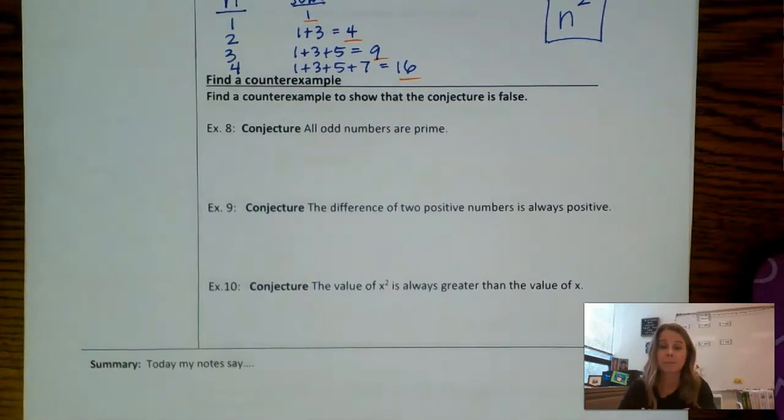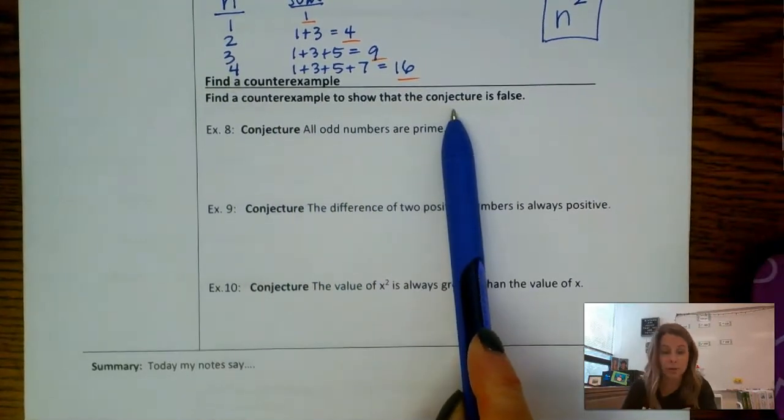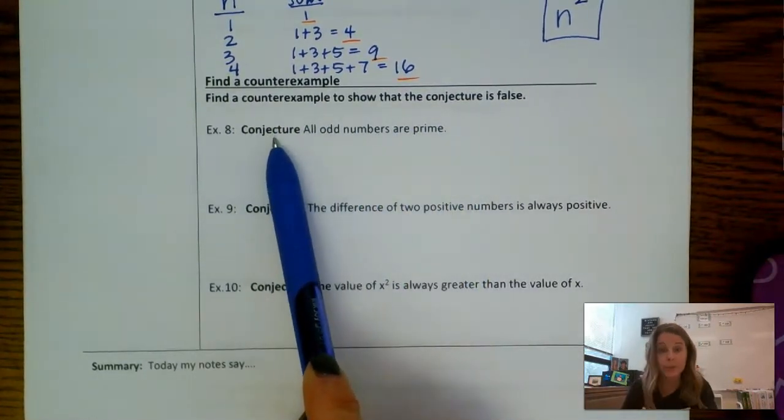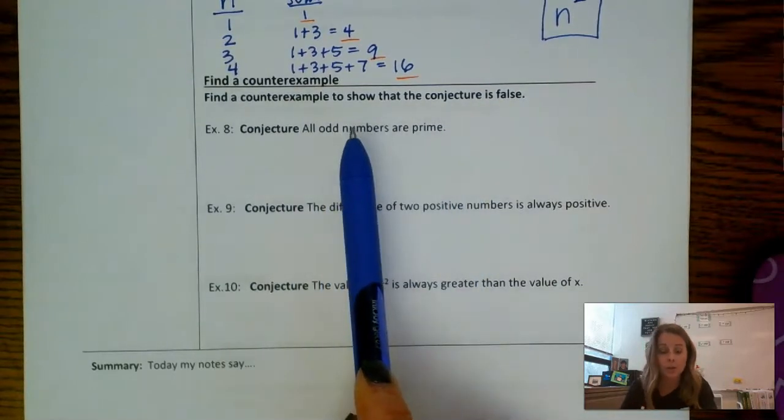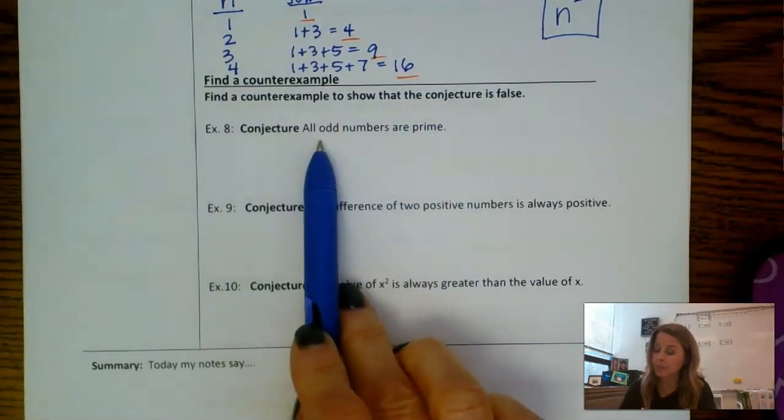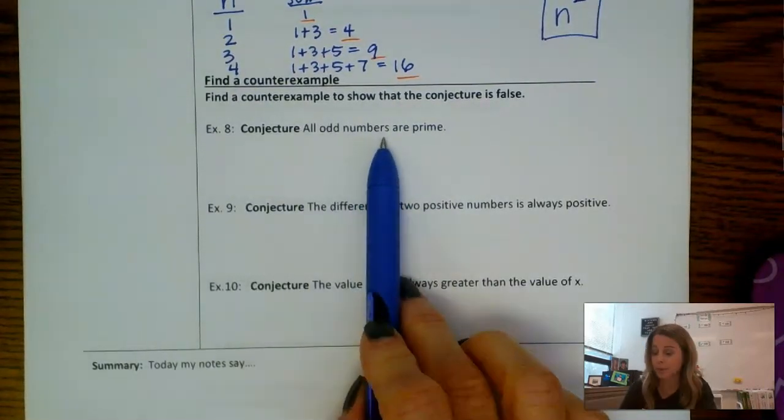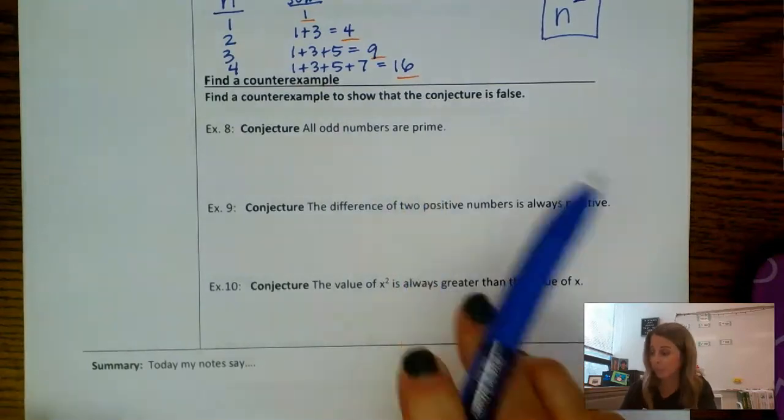There are often several counterexamples that would be valid. Find a counterexample to show that the conjecture is false. So here's the conjecture: all odd numbers are prime. So what we want to do when we do this counterexample is we still want to work with odd numbers, but we want to find examples that are not prime.